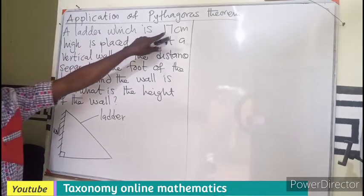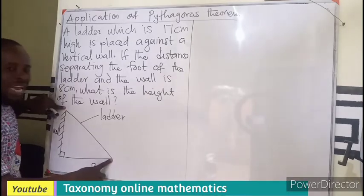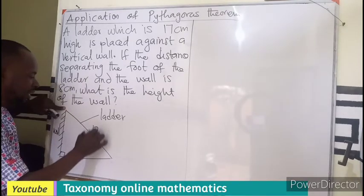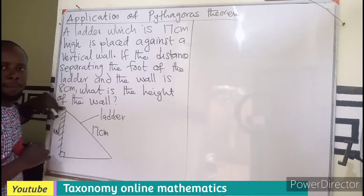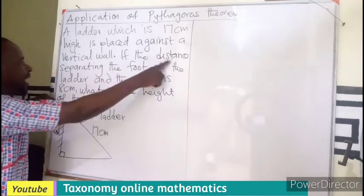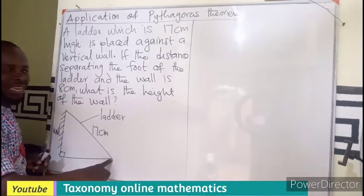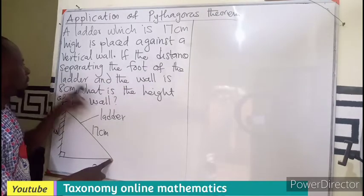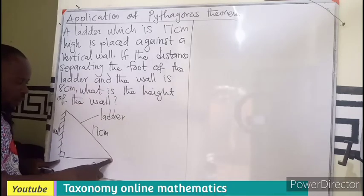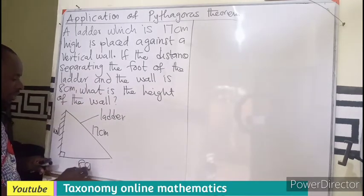A ladder which is 17 centimeters high, meaning the length of the ladder is what? 17 centimeters. That is the length of the ladder. So if the distance separating the foot of the ladder where the ladder touches the ground and the wall, this is the wall, the distance between them is what? 8 centimeters.